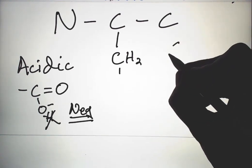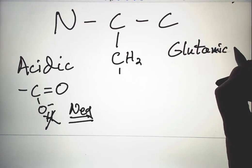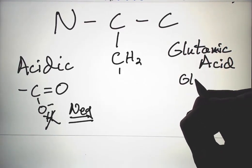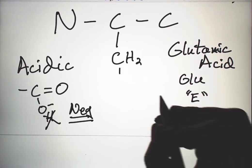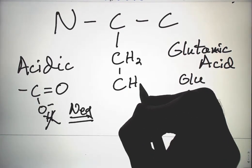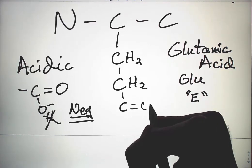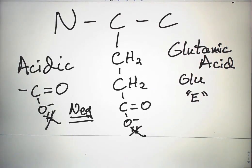And the other is glutamic acid, which is GLU or E because the G is taken by another amino acid. It's the same except it has a second CH2 and loses that hydrogen to become negative.